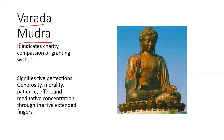In Varada Mudra, the right hand is raised and close to the chest, while the left hand is shown towards the downward. The right hand is upward and near the chest; the left hand is downward and far from the chest. The five bent fingers signify five perfections: generosity, morality, patience, efforts, and meditation ability.